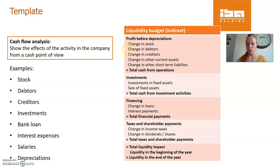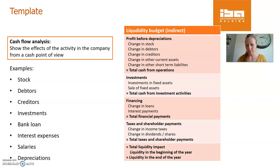We do the same with debtors — accounts receivable — and accounts payable, as well as other payable debts and changes in short-term liabilities overall. Then we have in-between calculations on the cash flow effect of those changes. We acknowledge what plans the company has made for investments or sale of any assets. And then if the company is going to take a new loan, repay loans, or have interest payments, etc. Overall, we take a look at the plans that the company has made and the liquidity cash flow effect on the company's cash flow.